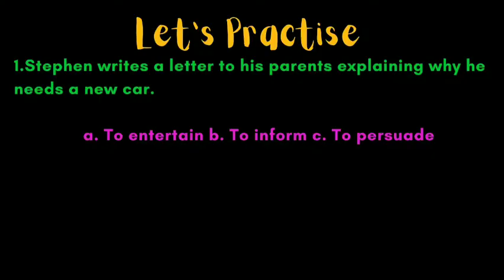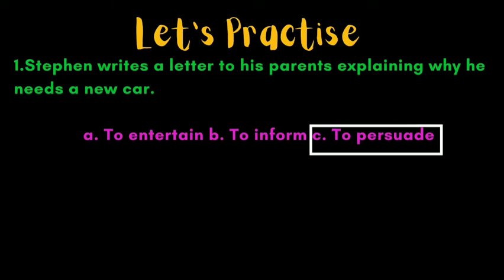Now let us try to identify the writer's intention in the following extracts. Number 1: Steven writes a letter to his parents explaining why he needs a new car. Is he writing to entertain, to inform, or to persuade? Since Steven is explaining why he should get a new car and presenting all his reasons, he is writing to persuade.